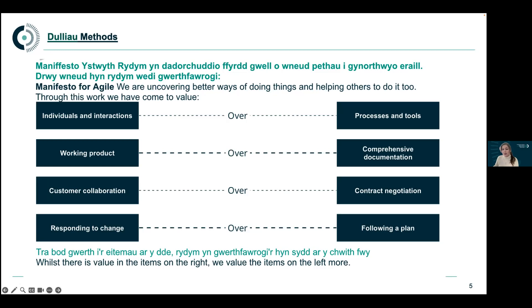The third point in the manifesto is that we value customer collaboration over contract negotiation. Ultimately, this allows us to understand if what we're creating is worthwhile. Whilst there's always a need for governance and potentially additional suppliers and support, speaking with our users means we can use meaningful data to improve what we do. And the last part of the manifesto is responding to change over following an agreed plan. This doesn't mean there is no plan — but Agile is set up so we can change what we're doing based on what we learn. Ultimately, change is good and we can learn valuable insights from it.